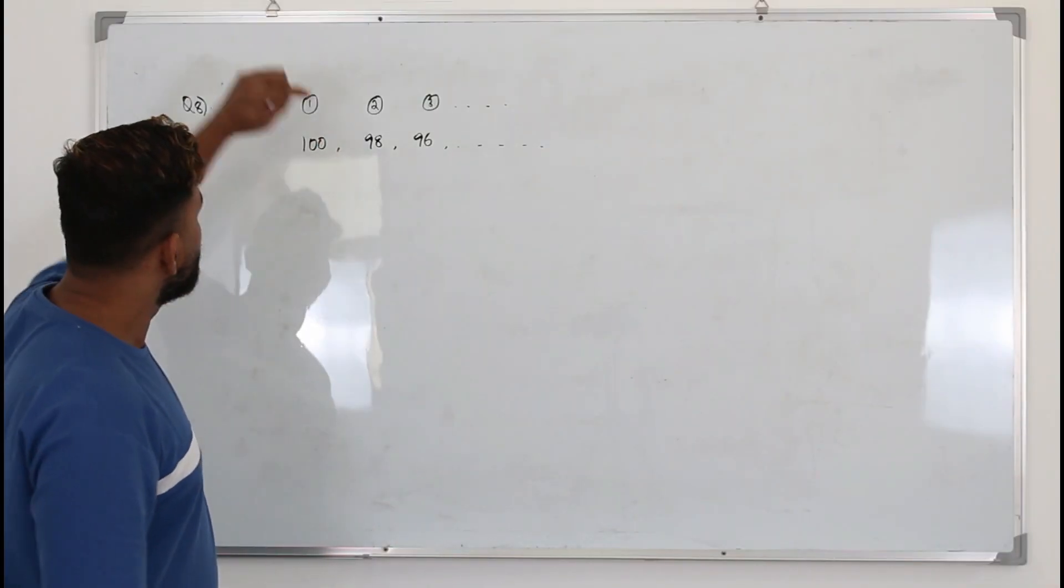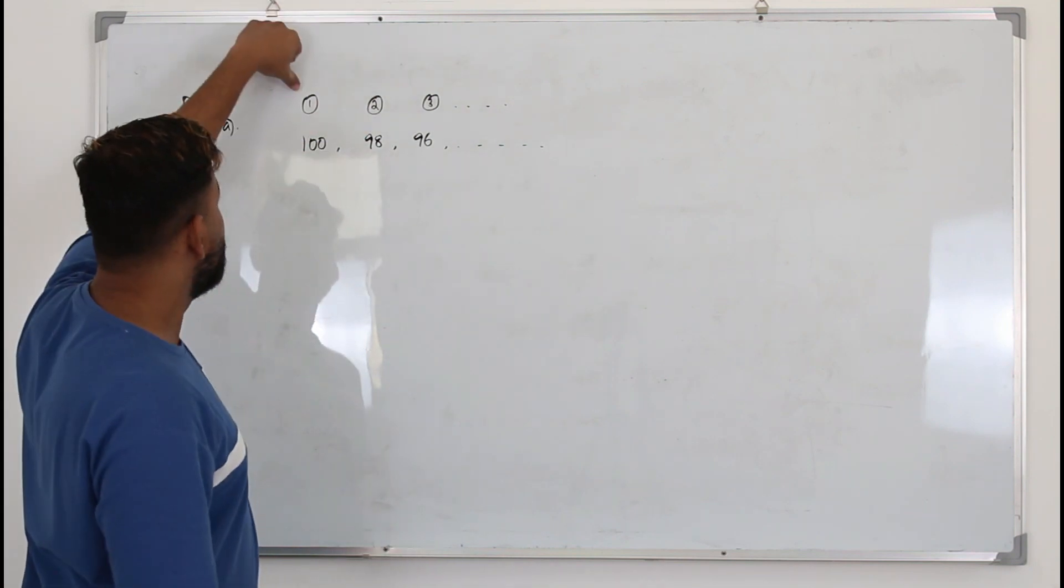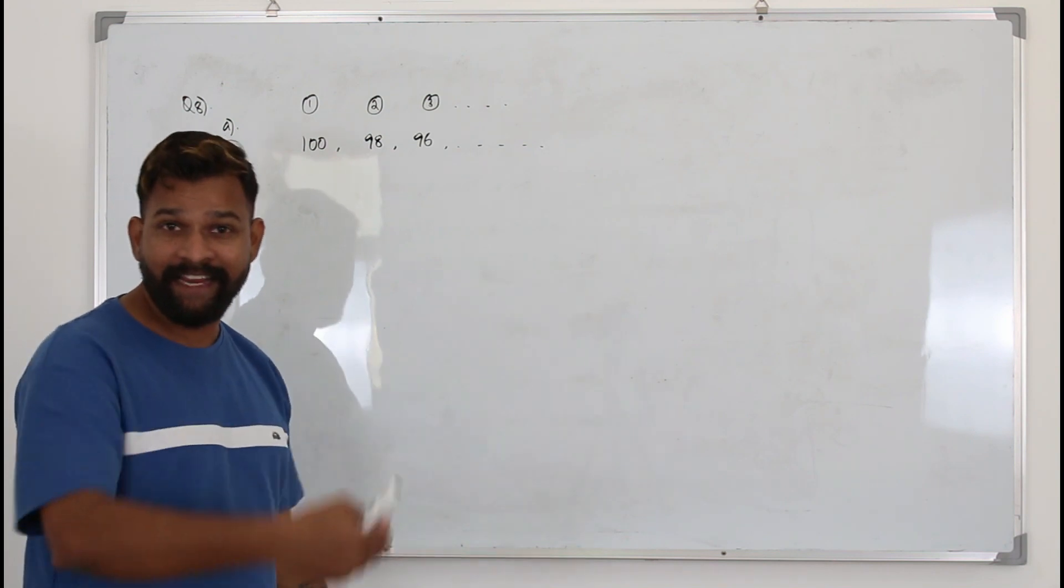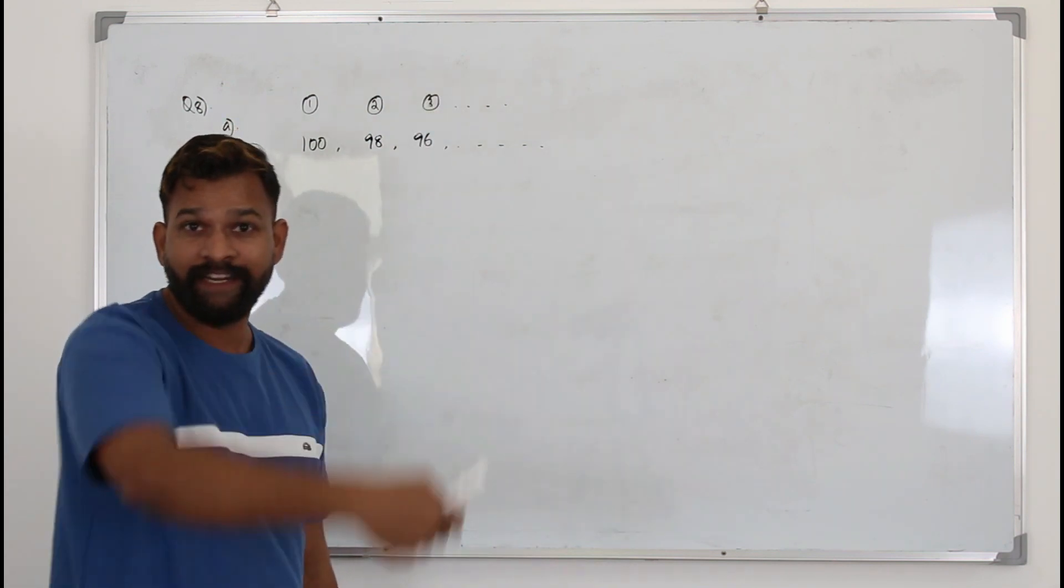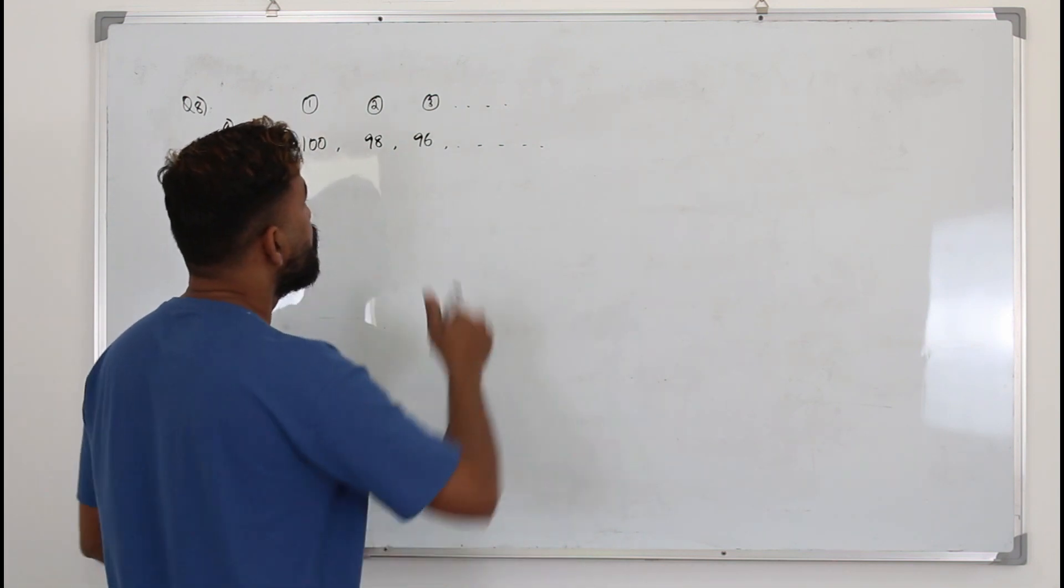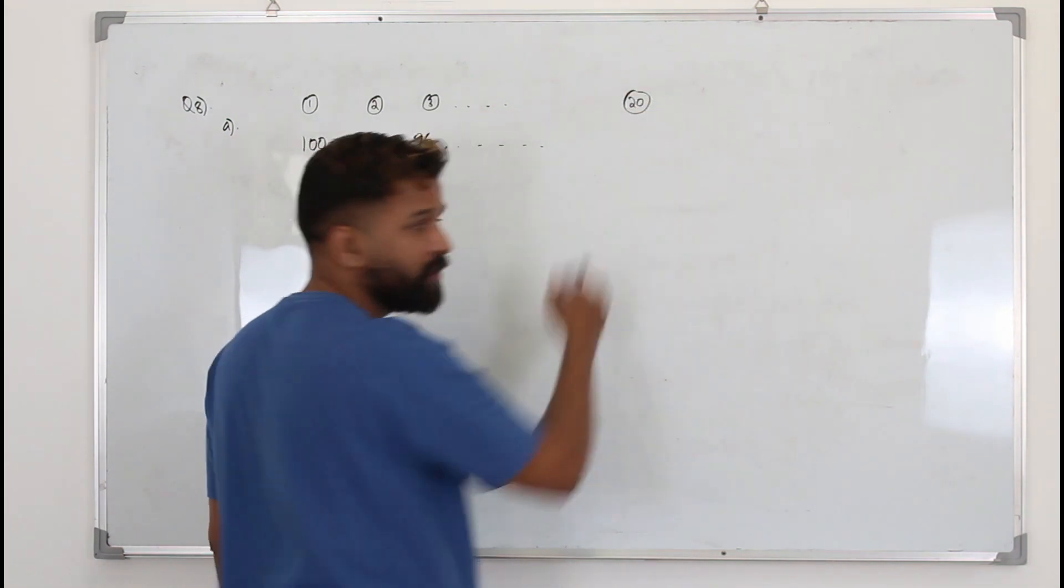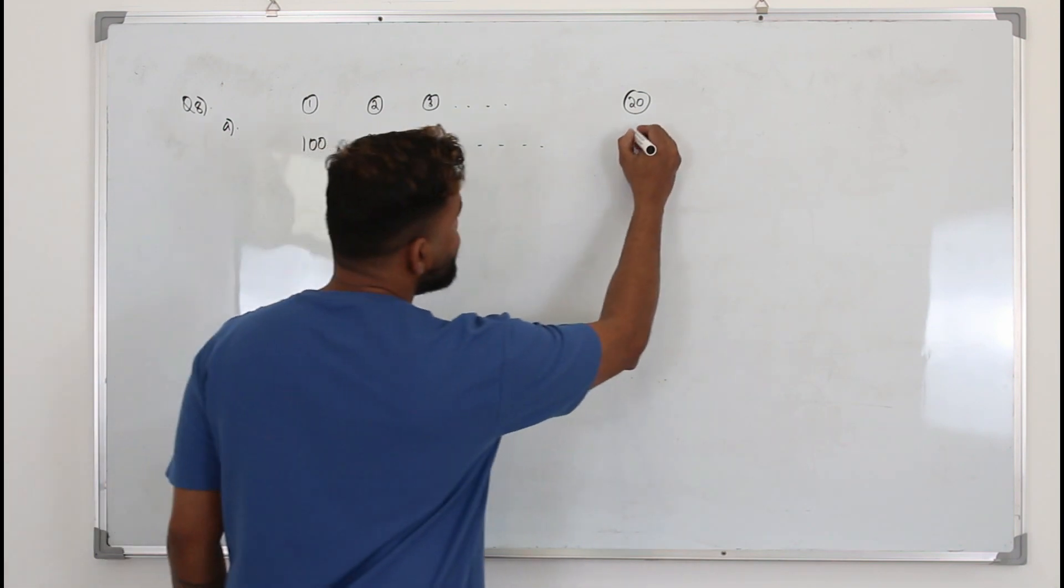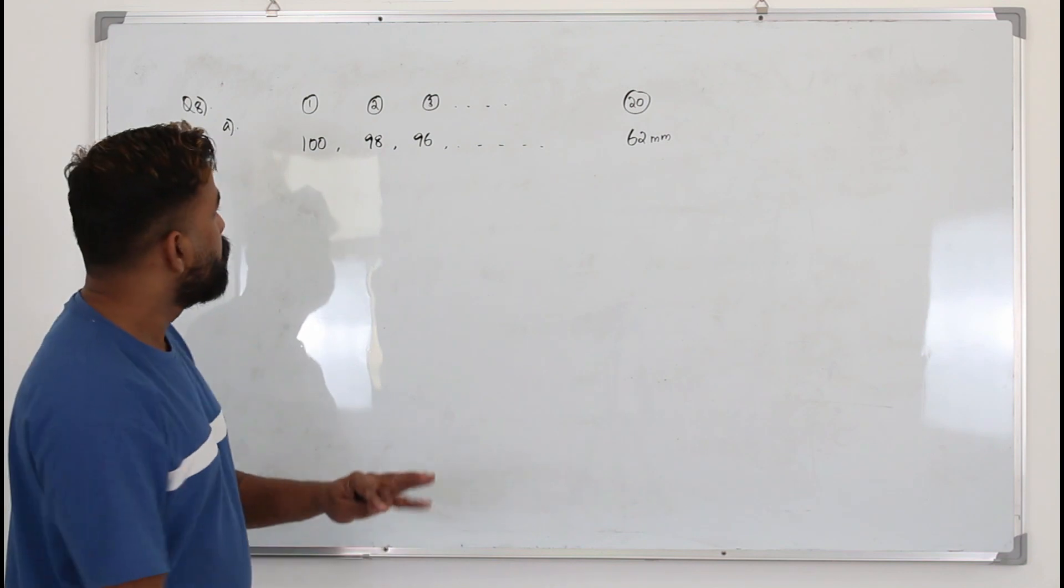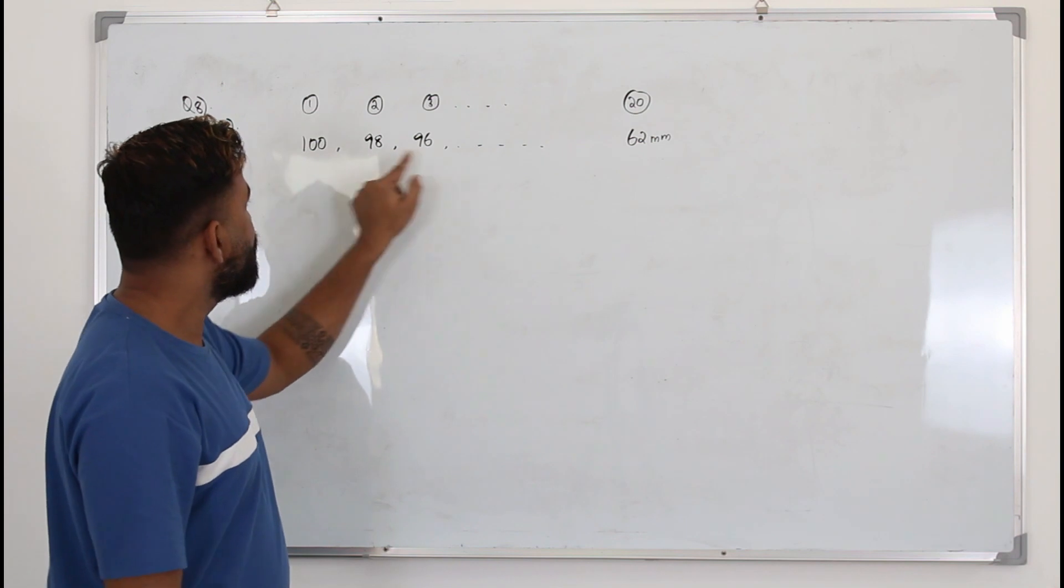Here in part A, the post is driven 100 mm into the ground in the first hit, with the second hit another additional 98 mm, in the third hit additional 96 mm. It keeps on reducing, decreasing. They want you to show that with the 20th hit the post will be driven 62 mm into the ground.